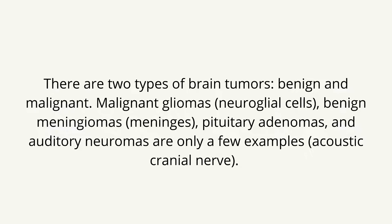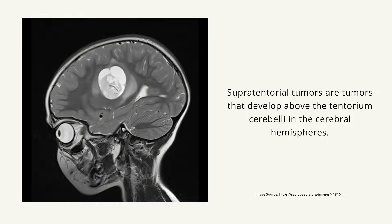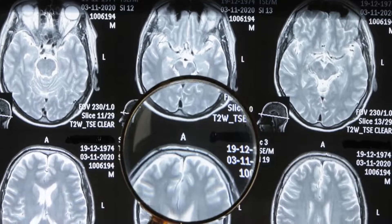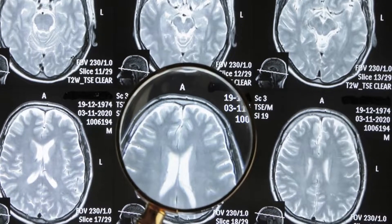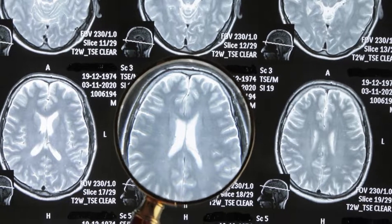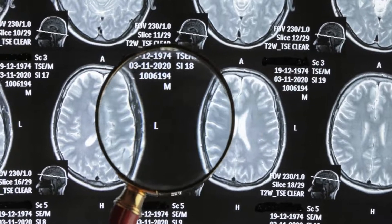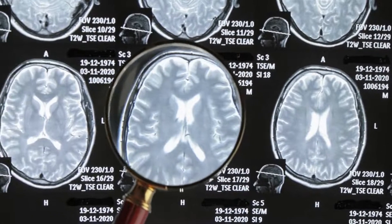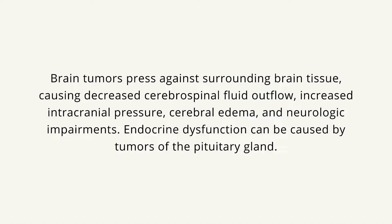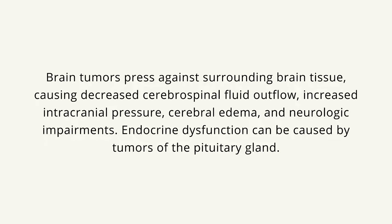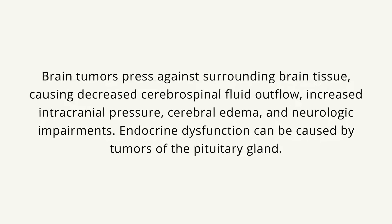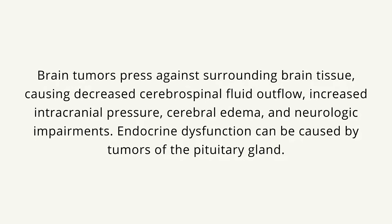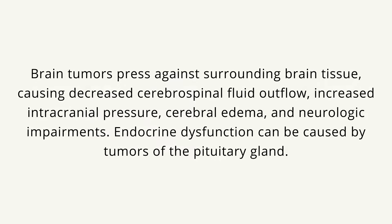The acoustic cranial nerve is also relevant. Supratentorial tumors develop above the tentorium cerebelli in the cerebral hemispheres. Infratentorial tumors occur below the tentorium cerebelli, such as tumors of the brainstem and cerebellum. Brain tumors press against surrounding brain tissue, causing decreased cerebrospinal fluid outflow, increased intracranial pressure, cerebral edema, and neurologic impairments.